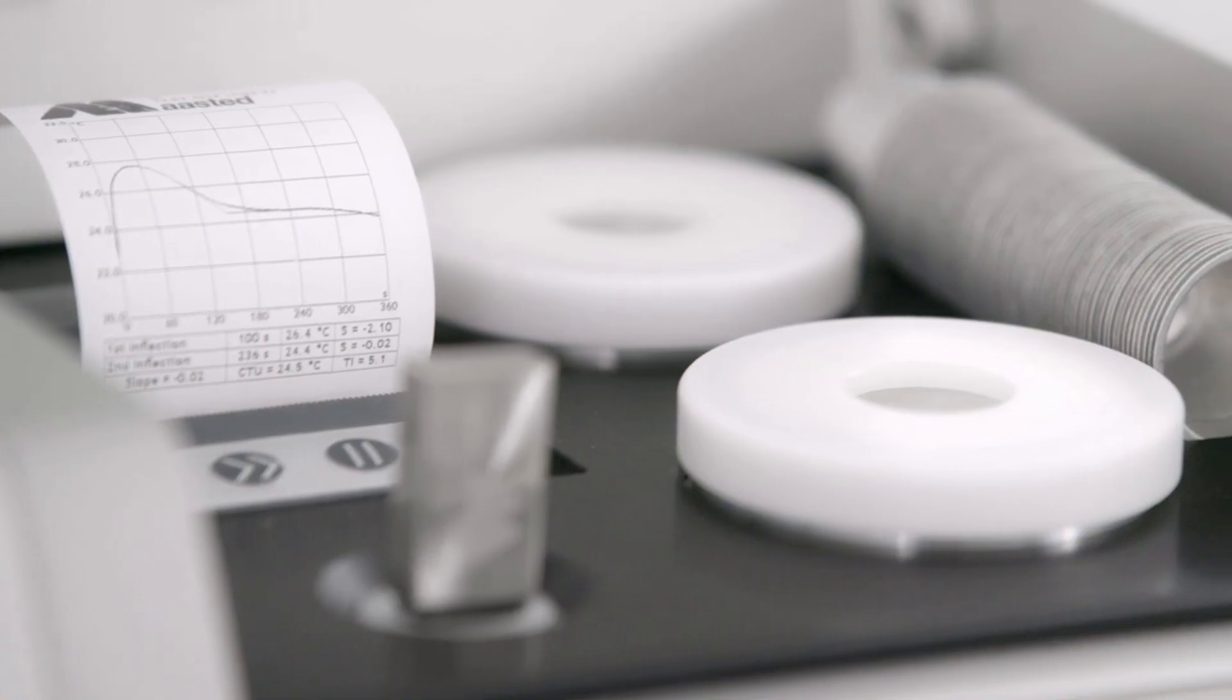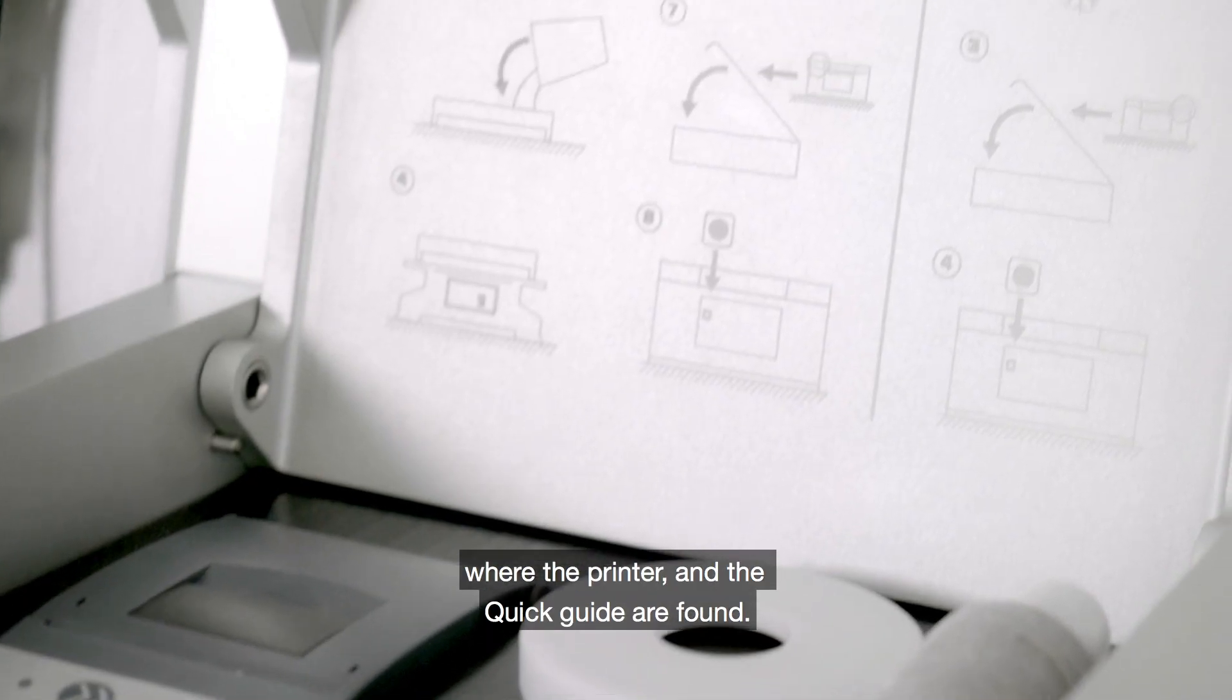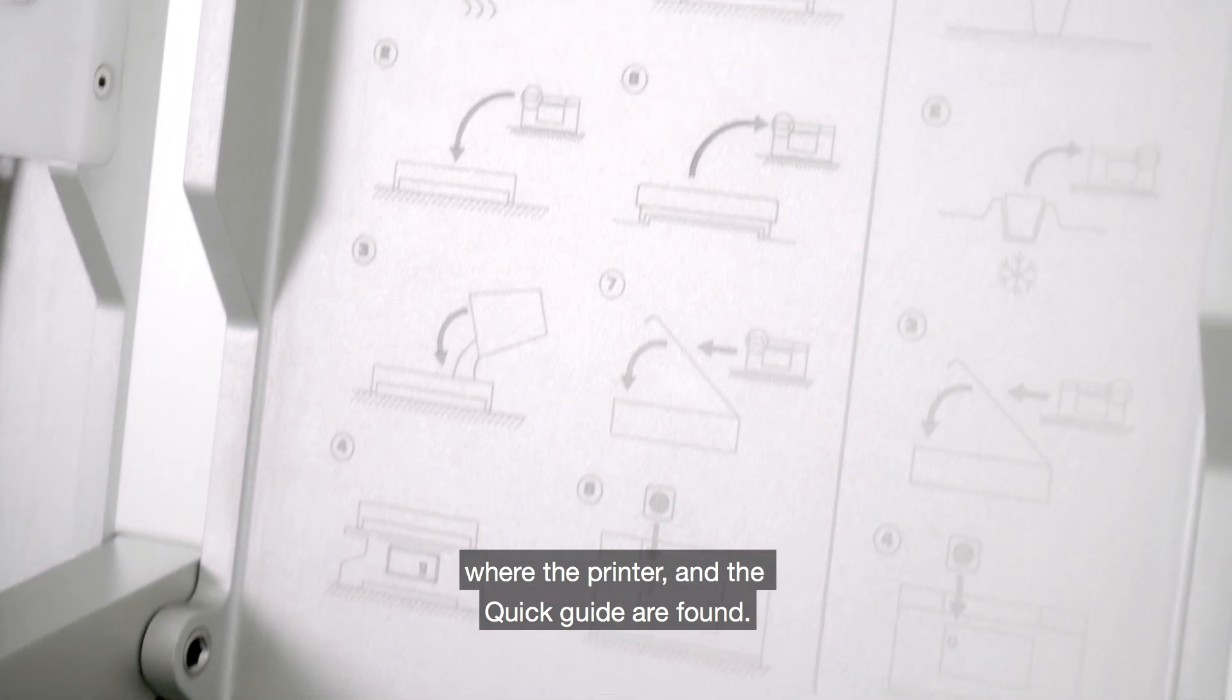Read carefully. Cups and USB can be placed under the middle cover where the printer and the quick guide is found.